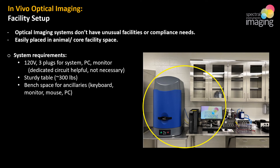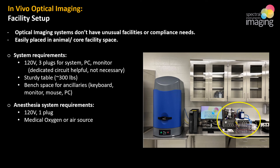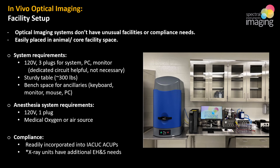Floor-standing units are about seven feet tall, so you'll want space for those. The anesthesia system needs an outlet for the vacuum pump, medical oxygen or air to drive the system, and you'll need the appropriate compliance documentation for isoflurane. These systems are readily added to animal care and use protocols. Attention is often most focused on surface sanitization between uses, which is guided by current facility protocols and manufacturer guidance for proper system safety and operation — typically not difficult hurdles.